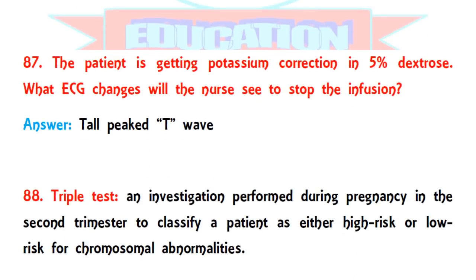Question 87: a patient is getting potassium correction in 5% dextrose. What ECG change will the nurse see to stop the infusion? Overuse of potassium causes ECG changes. When the nurse observes tall peaked T-waves, she must immediately stop the potassium infusion.